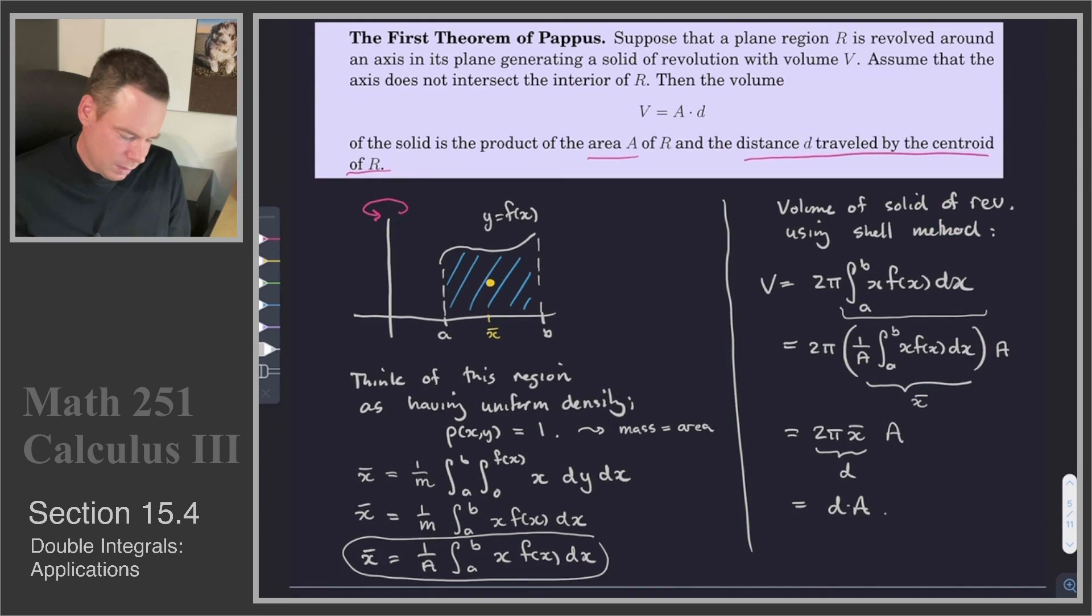And what it does is it connects the ideas from this course, from Calculus 3—this idea of center of mass for some region—and we've connected that with volumes of solids of revolution from before. And we've got new insight into the method of cylindrical shells and its connection to these centers of mass.